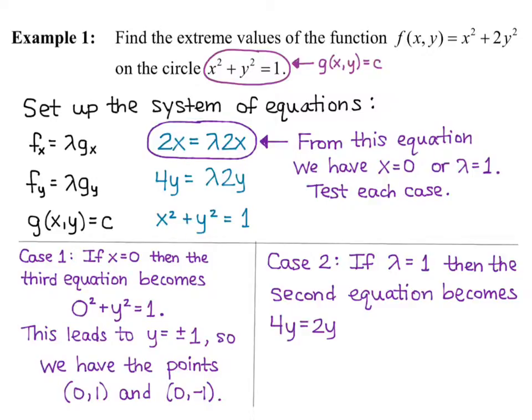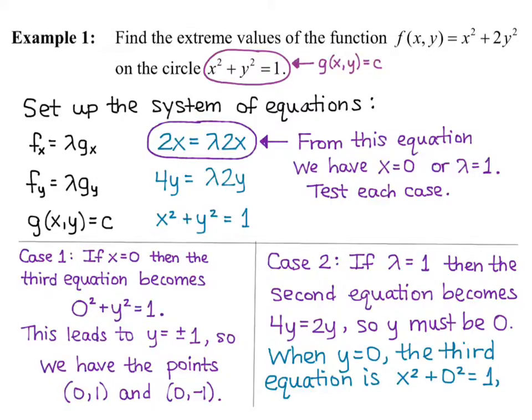In Case 2, if lambda equals 1, the second equation becomes 4y equals 2y, and the only way that's true is if y equals 0. When y is 0, the constraint becomes x squared plus 0 squared equals 1, so x equals plus or minus 1. That gives us the points (1, 0) and (−1, 0). So we have four points at which our function reaches either a maximum or minimum on the constraint.